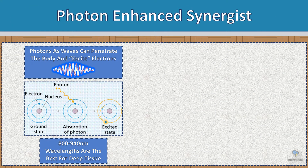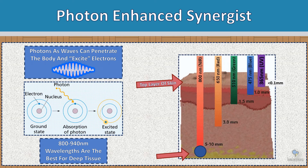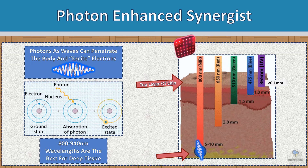Photon enhanced synergies: photons as waves can penetrate the body and excite electrons. When a photon hits a molecule, the electron gets energy — they call it an excited state. Between 800 and 940 nanometer wavelengths are the best for deep tissue penetration. UV light can barely penetrate the skin. Here is an example of red light therapy: the photon is emitted and touches the molecule, the molecule absorbs it, the electron becomes excited, and therefore this becomes an ion.